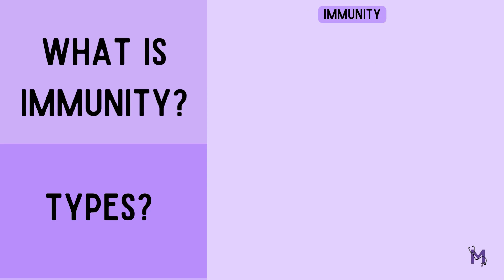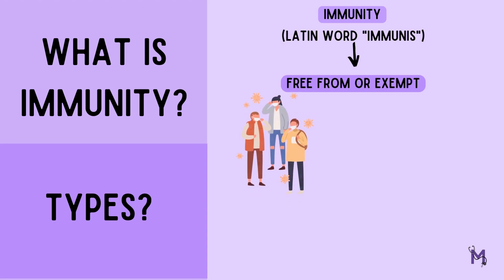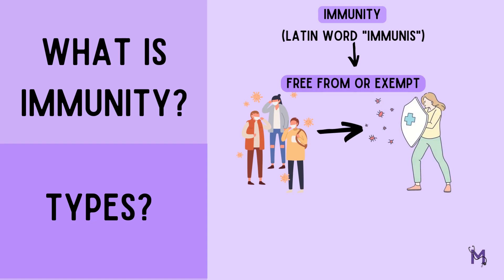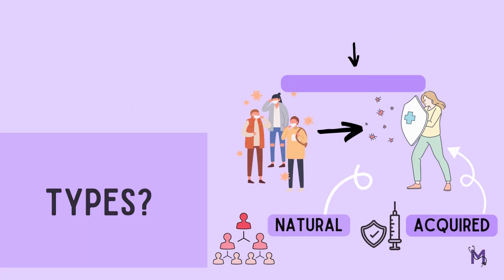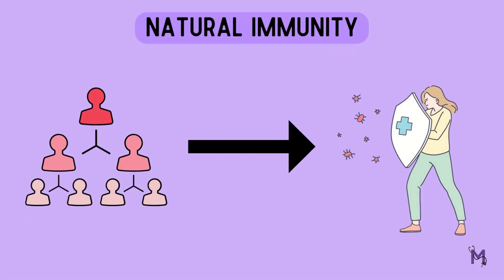The word immunity is derived from the Latin word 'immunis,' which basically means free from or exempt. Our environment is constantly surrounded by microbes, and hence the body naturally possesses the power to resist their attacks. But this power may be inherited or acquired. When the body has inherited resistance to infection, we term it as natural immunity.